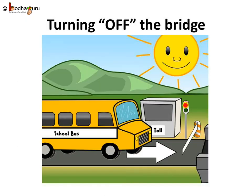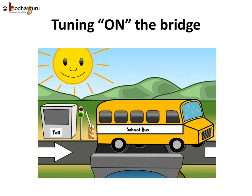Can you tell what that toll booth does at the starting of the bridge? It controls the flow of the buses through the bridge by opening and closing the gate. Toll booth stops the flow of vehicles and again starts the flow by giving vehicles permission to pass.